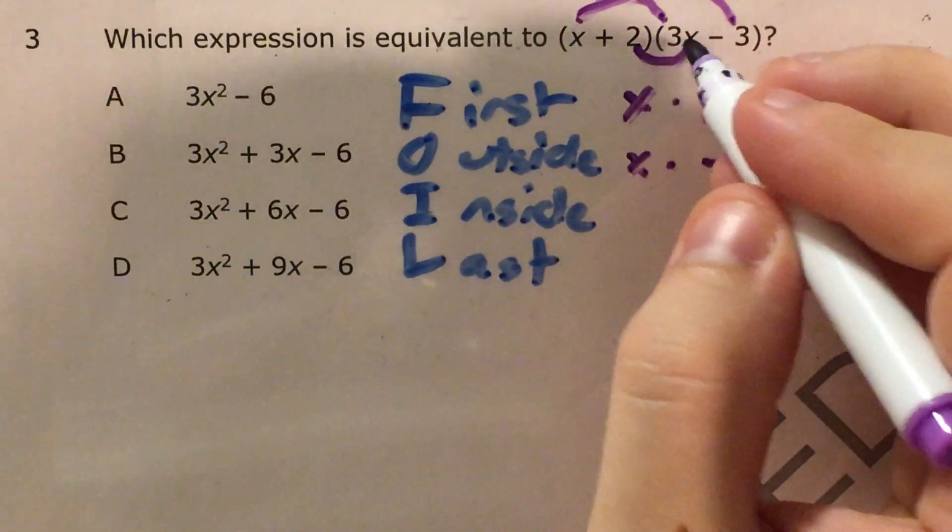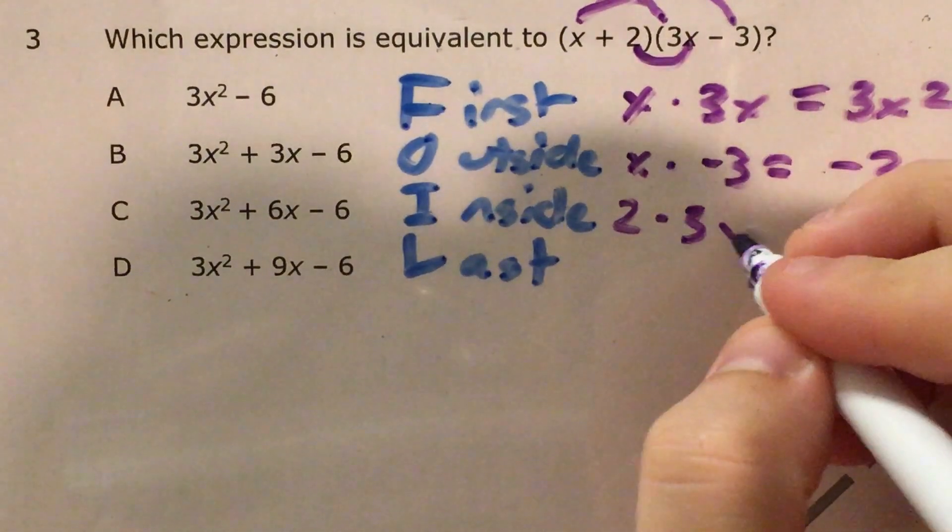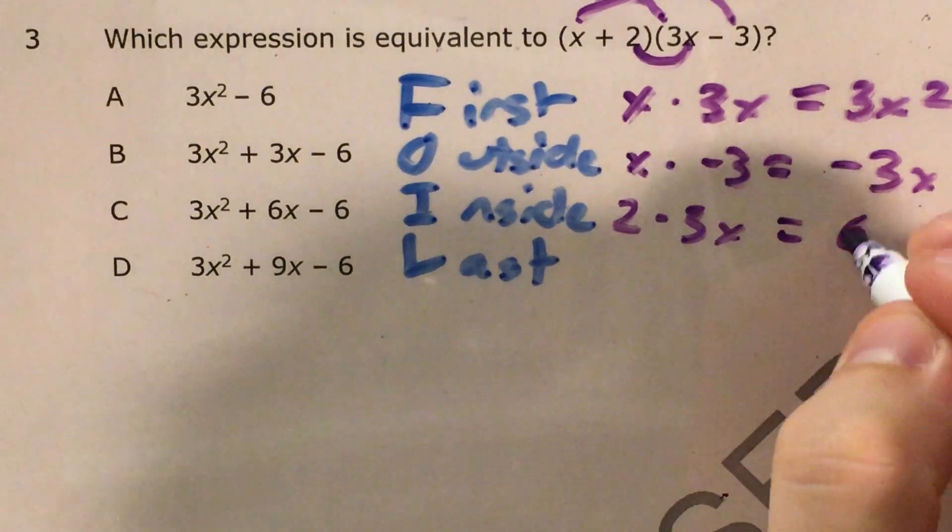Inside is the two numbers that are on the inside, that's 2 times 3x, which gets me 6x.